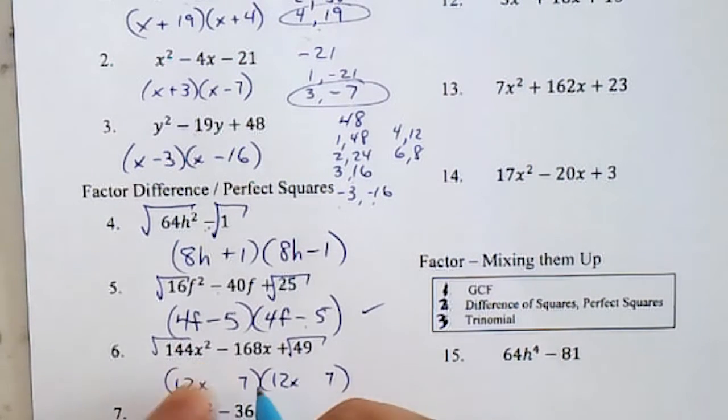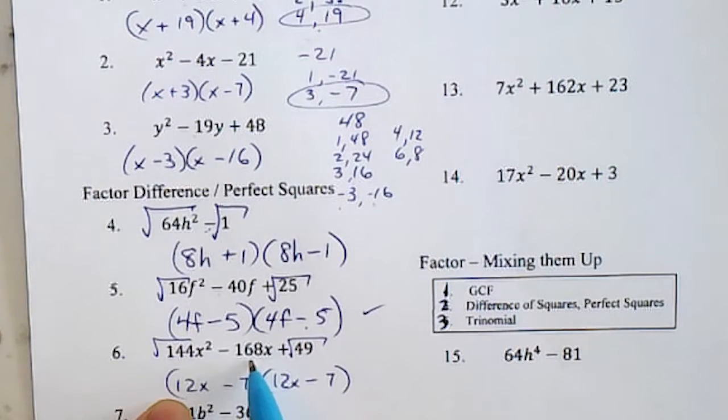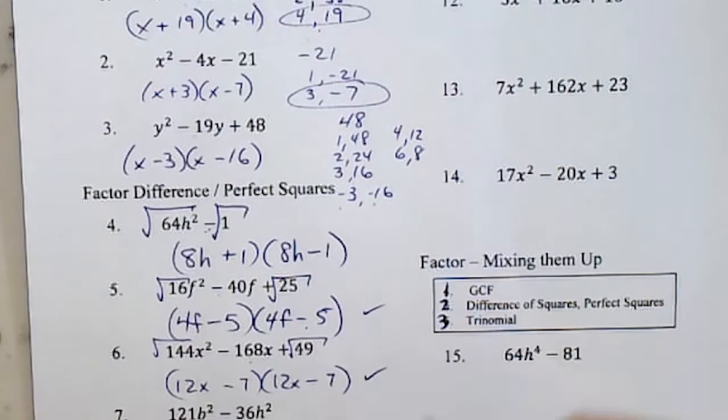And this one also is negative. If I check my work, 7 times 2 is 84. I get another 84. Double it, negative 168, check.